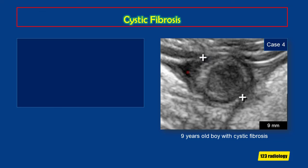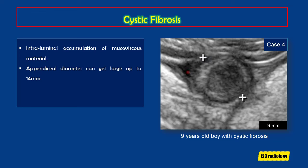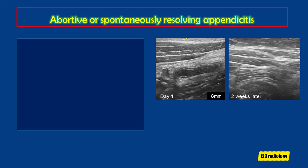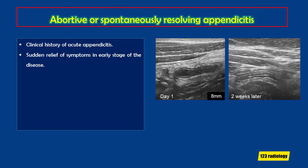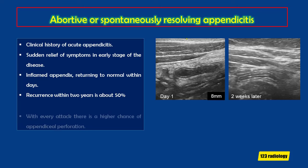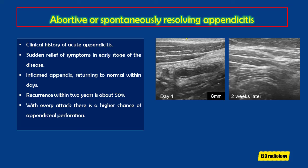In a 9-year-old boy with cystic fibrosis, the appendix is incidentally noted at 9 mm in diameter in the right lower abdomen. Similar to fecal distension, there is intraluminal accumulation of mucovisous material; the appendiceal diameter can reach up to 14 mm. The appendiceal wall and peri-appendiceal soft tissues are normal. Finally, abortive or spontaneously resolving appendicitis requires a clinical history of acute appendicitis with sudden relief of symptoms in early stage. Ultrasound shows an inflamed appendix returning to normal within days. Recurrence within 2 years is about 50%, and with every attack there is a higher chance of perforation — so the policy is immediate appendectomy even if symptom-free.